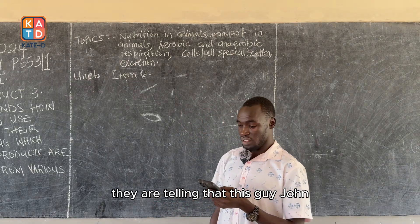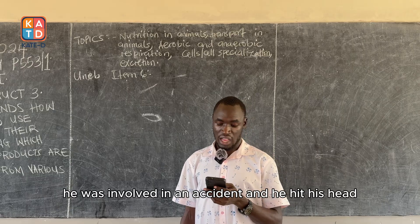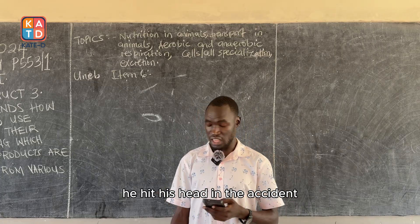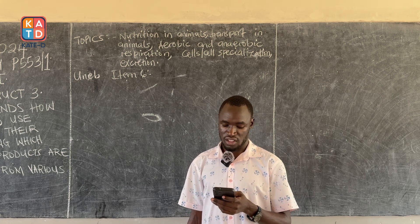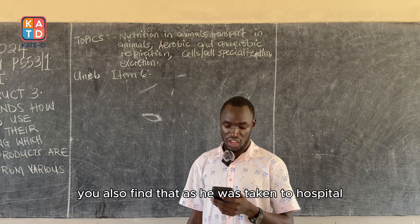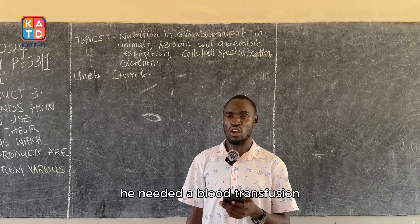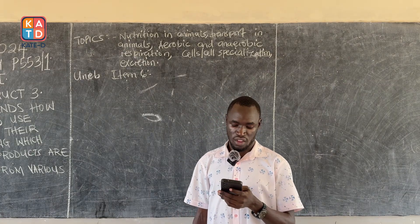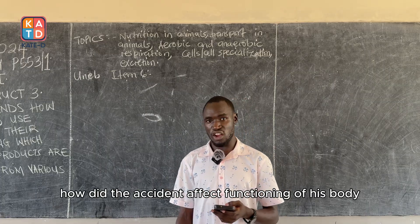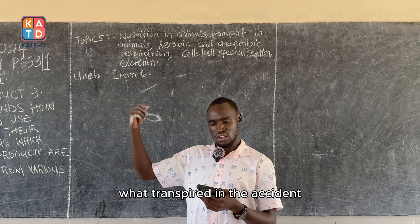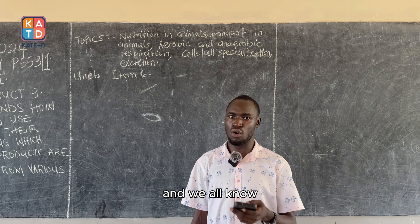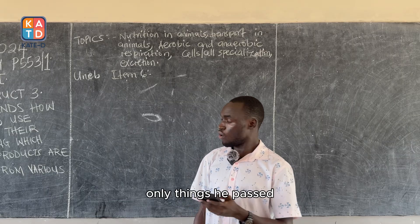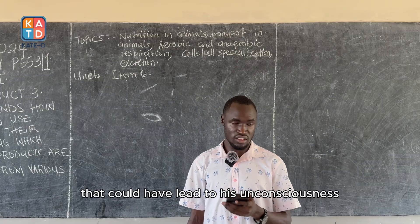Looking at item 6, John was involved in an accident where he hit his head, which led him to lose a lot of blood, making him unconscious. He needed a blood transfusion. For task part A, explaining how the accident affected John's body functioning, you have to check what transpired: he hit his head, which has certain consequences, and he also lost a lot of blood. You must identify the things he faced that could have led to his unconsciousness.